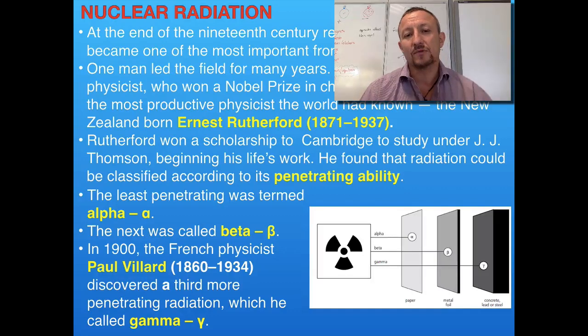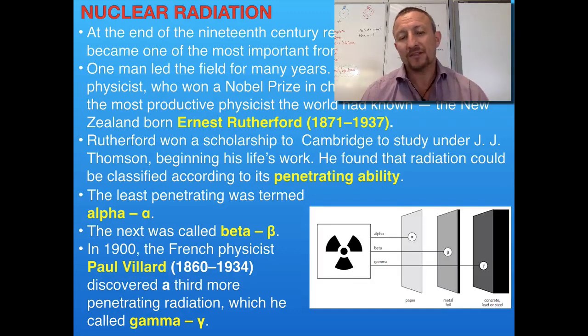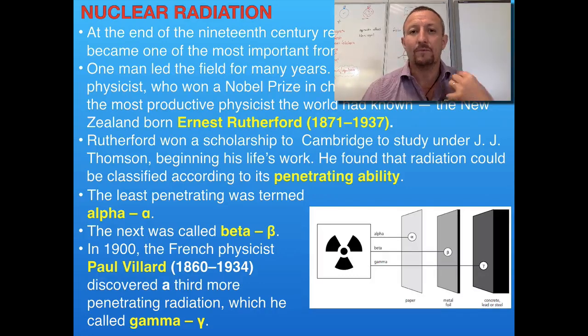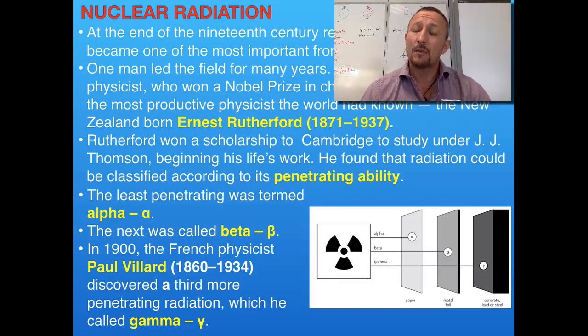So we've got these three main particles: alpha particles with low penetration, beta particles with a little higher penetration, and gamma particles which have very, very high penetration.